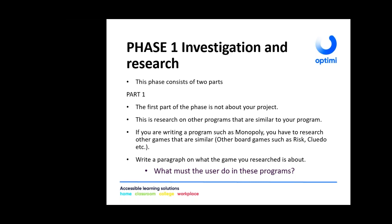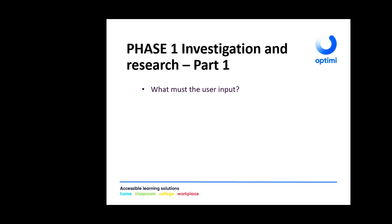For example, in Monopoly, what does the user do? The user needs to log on, move, and throw the dice. In Risk, what does the user need to do? Consider what input the user needs to provide — what does he need to enter? What does the program process? For Monopoly, you throw the dice, your piece moves, it lands on a specific street, and something happens there. Consider what the program outputs.